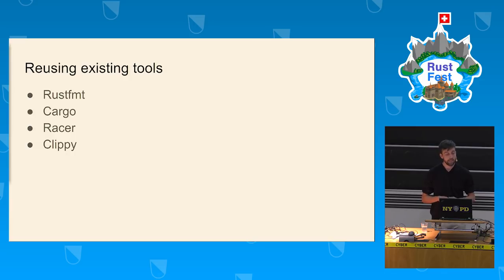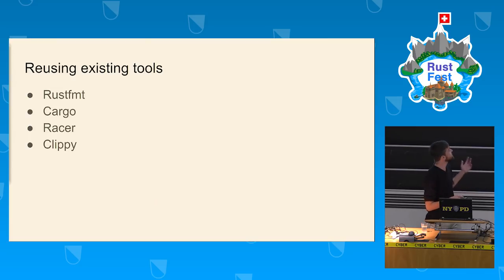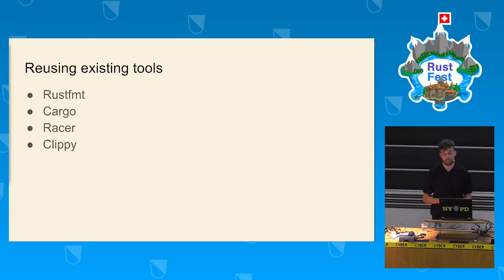The RLS aims to reuse all existing tools rather than reimplementing IDE functionality from scratch. For example, when you want to format a document you can use rustfmt, for project structure analysis you use cargo as a library, and for autocompletion there's racer. In this regard, the RLS serves as a single point of entry for all the IDE features you might want.